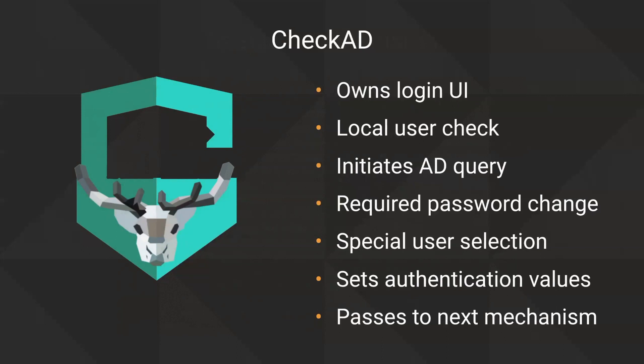Check AD is the biggest and most involved mechanism. It owns the login UI that comes up — the login window. It does the first user check locally; if there's no local user, it initiates the AD query and returns those results. It also responds to and presents UI for required password changes — for example, if a password has been reset and 'require user to change password on next login' is set. It handles special user selection for shutdown and restart buttons. After gathering all data, it sets the authentication values needed and passes on to the next mechanism.